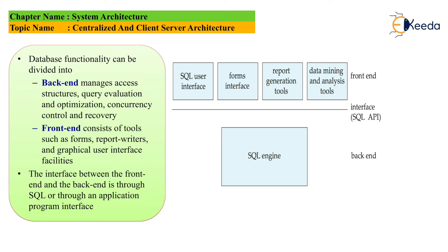The client and server are connected over a network, and SQL commands interface with the database through JDBC or ODBC connectivity. JDBC connectivity allows SQL engine optimizations and database operations to be performed via a SQL user interface using Java or other high-level programming languages.